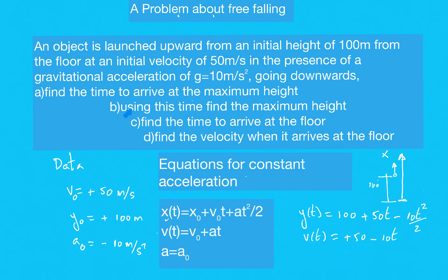Part B: using this time, find the maximum height. We already know the time to arrive at the maximum height. Solving: 50 = 10t, so t = 5 seconds. The time to reach the maximum height is 5 seconds. Now find y(5) = 100 + 50(5) − ½(10)(5²).